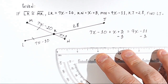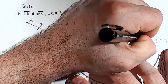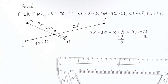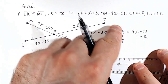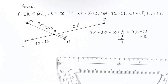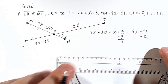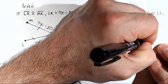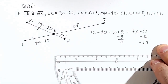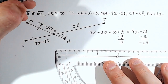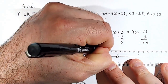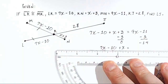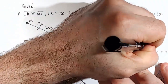After subtracting 3 from both sides: 3 minus 3 is 0, and negative 11 minus 3 — you're moving further left on the number line — so negative 11 minus 3 is negative 14. Rewriting: 7x minus 10 plus x equals 9x minus 14.